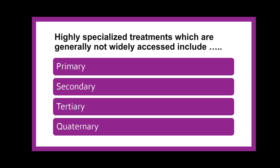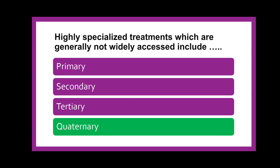Next question: Highly specialized treatments which are generally not widely accessed — such as treatments for particular diseases like cancer — fall under which facility: primary, secondary, tertiary, or quaternary? These treatments are available in the quaternary health care facility.